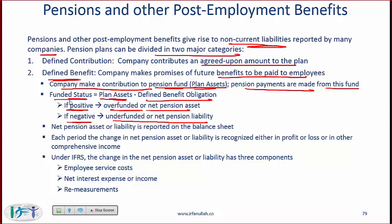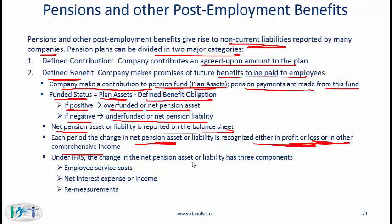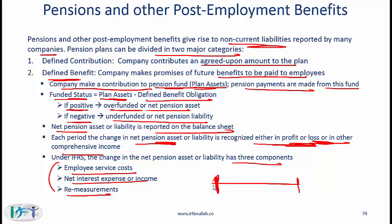If the funded status is positive, the plan is overfunded (net pension asset); if negative, it is underfunded (net pension liability). Both IFRS and US GAAP require the net funded status to be reported on the balance sheet. Under IFRS, the change in net pension asset or liability has three components: employee service cost, net interest expense, and remeasurements. Certain components go to the income statement and others to other comprehensive income, which we touched on in the readings on the income statement and balance sheet.